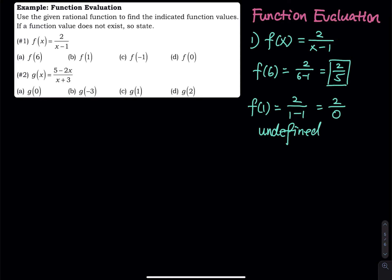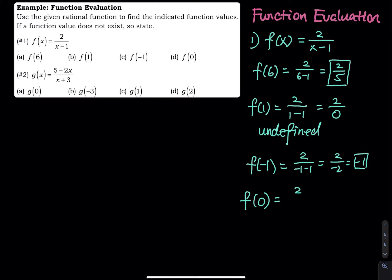And then what about x equals negative 1? We have 2 divided by negative 1 minus 1, so that is 2 divided by negative 2, which equals negative 1. And then f of 0: we have 2 divided by 0 minus 1, which is 2 divided by negative 1, that equals negative 2. So that is the first function.